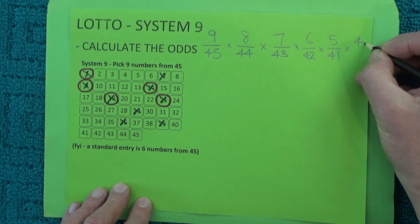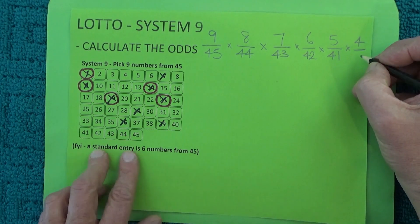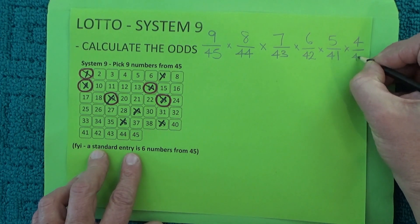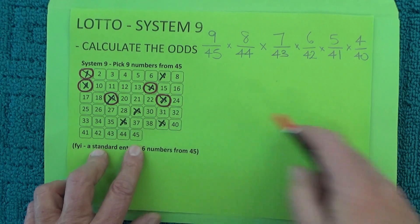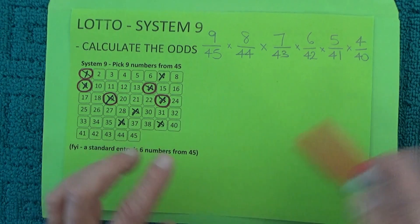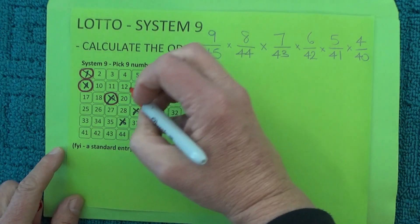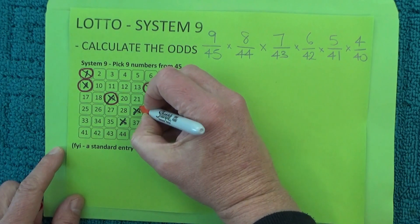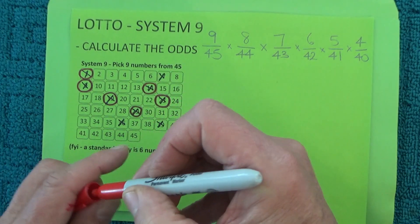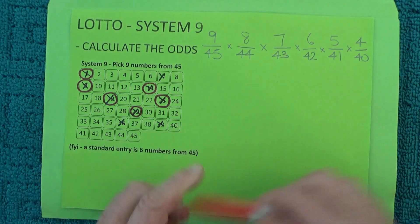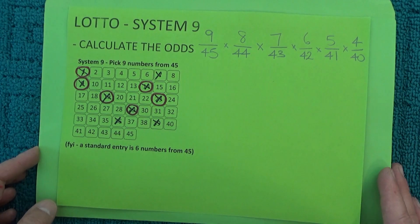Four chances in 40 — there are 40 numbers left in the barrel, four chances in 40 of matching the final number drawn. I'll mark off another number to show it has actually been matched.